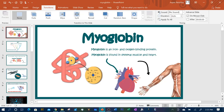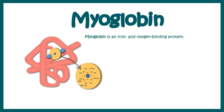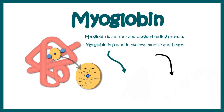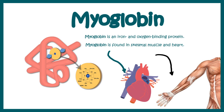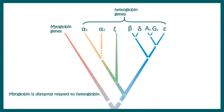Hello, in this video we'll talk about myoglobin. Myoglobin is an iron and oxygen binding protein found in skeletal muscles and heart. Myoglobin is actually a distant relative of hemoglobin — millions of years ago, myoglobin genes branched off from hemoglobin genes.